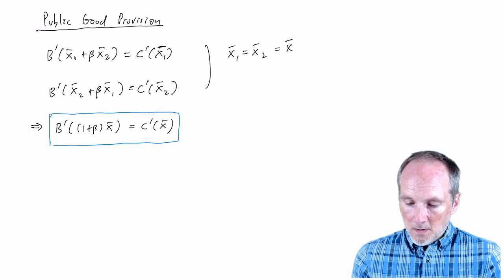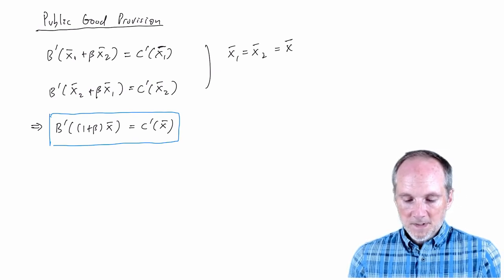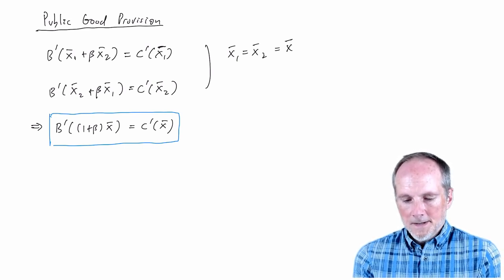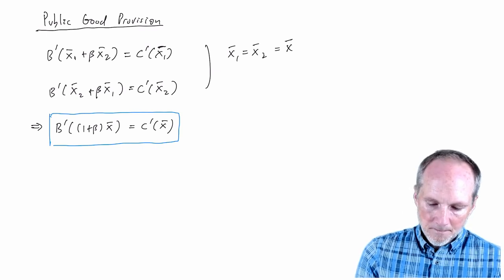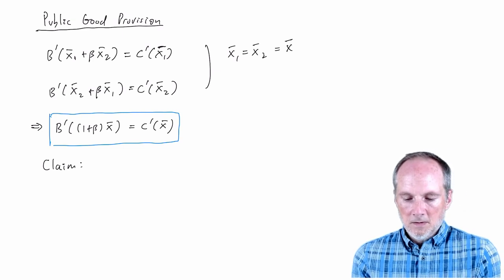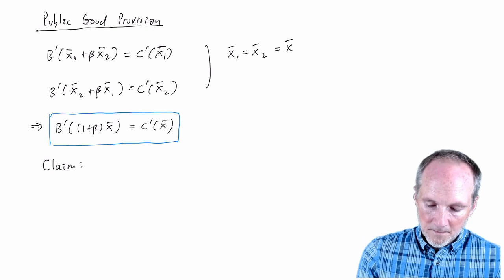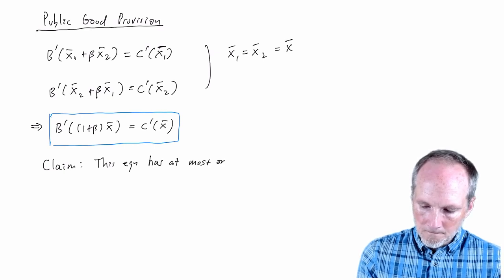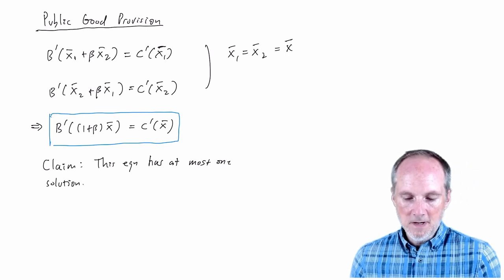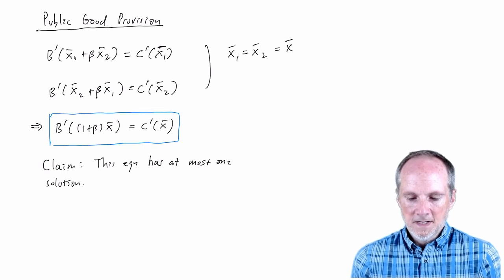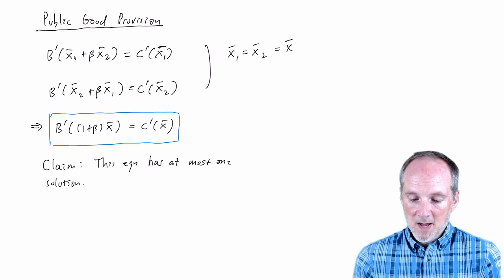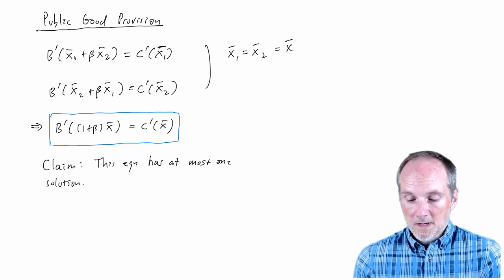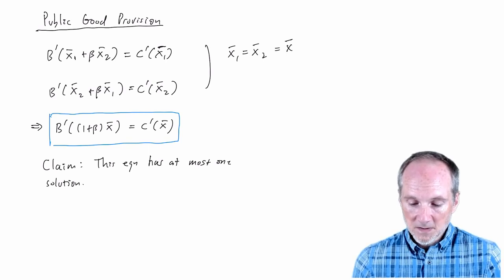So now, actually, the phrasing I was using was that there's a unique equilibrium. We don't know that quite yet, but we will in just a minute. I want to argue that this equation that I've just written can have at most one solution. And here I haven't proven that it does have one. But that's easy enough to take care of with other arguments. We need to impose a little structure on the problem. But I want to just focus on this claim here, that there's at most one solution to this. And that would mean that there is at most one symmetric Nash equilibrium. So why is this claim true?